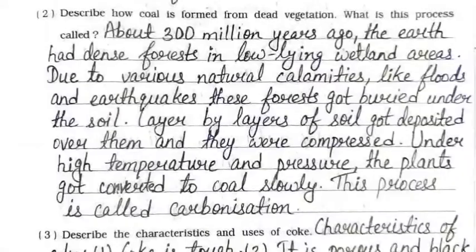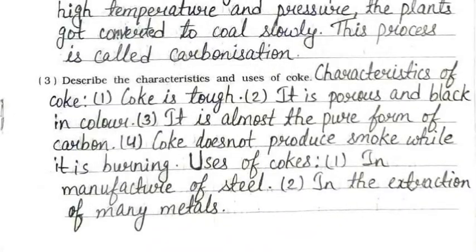Second: about 300 million years ago, the earth had dense forests in low-lying wetland areas. Due to natural calamities like floods and earthquakes, these forests got buried under the soil. Layer by layer, soil was deposited over them and they were compressed under high temperature and pressure, converting the plants slowly into coal. This process is called carbonization.